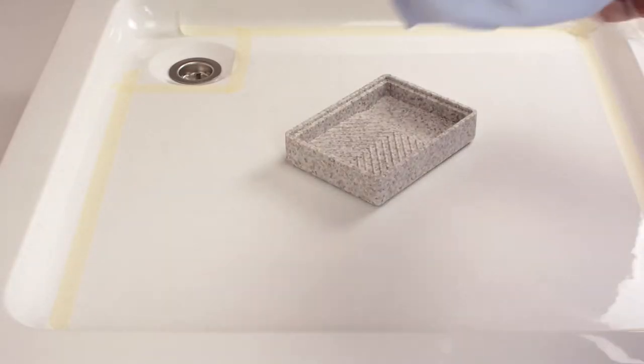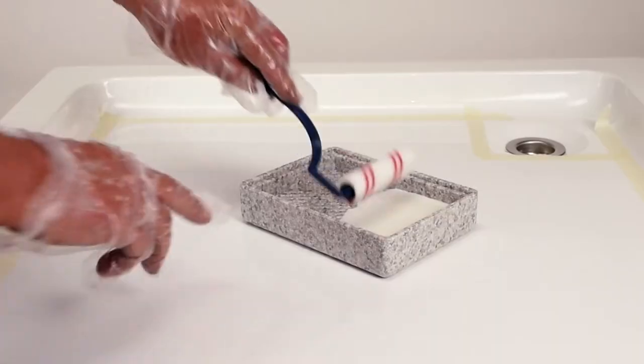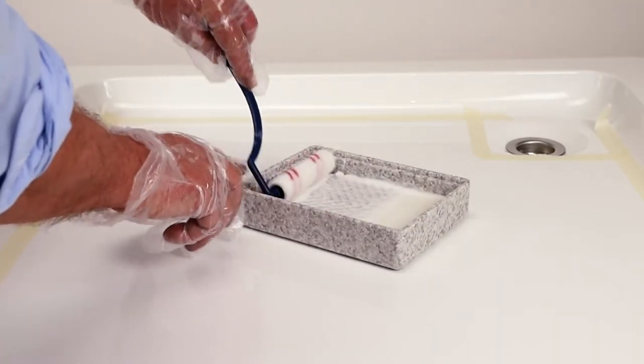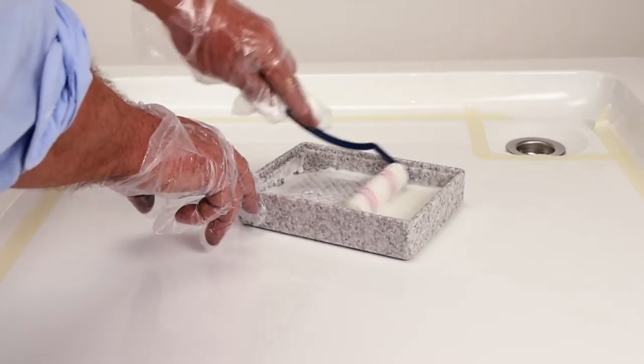Pour the mixture into the lid and coat the pile roller sufficiently. Wipe it off on the edge a few times in order to work the granules into the roller evenly.